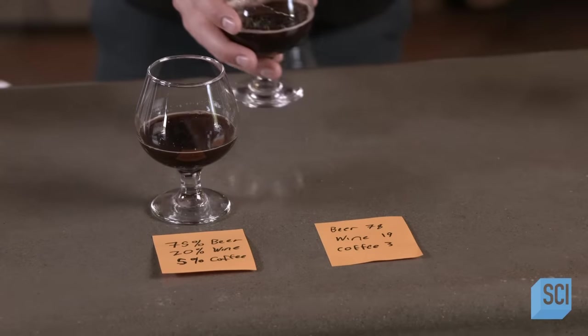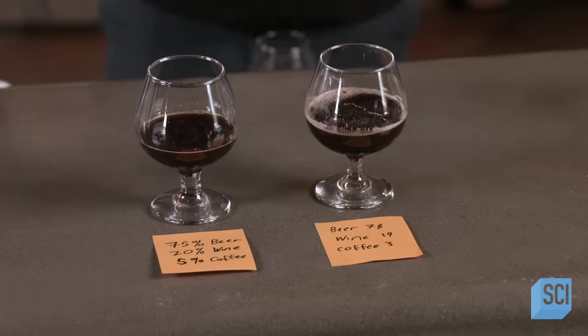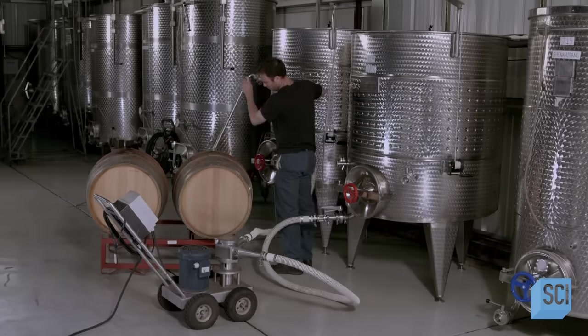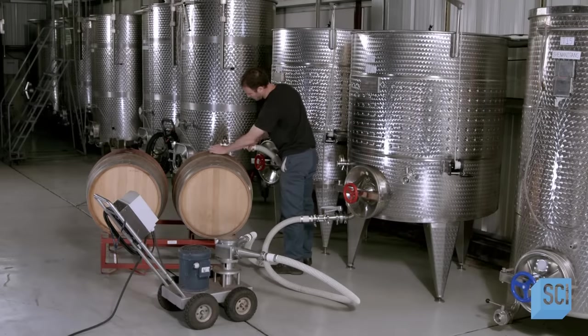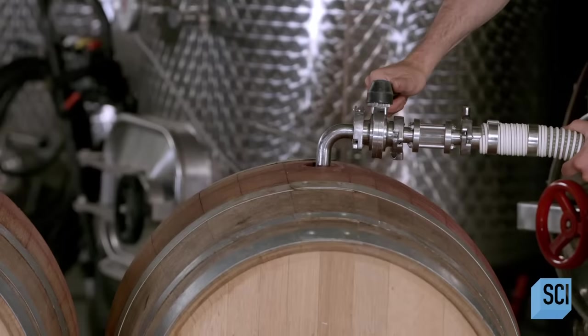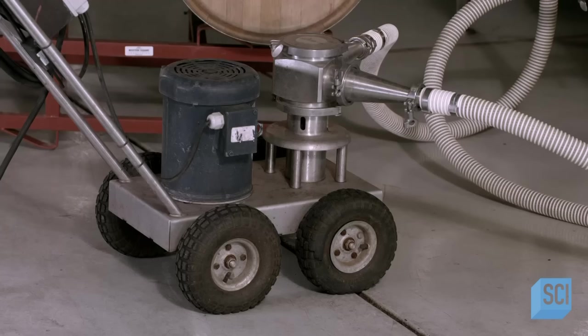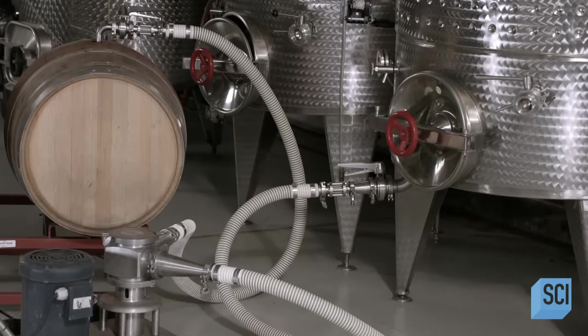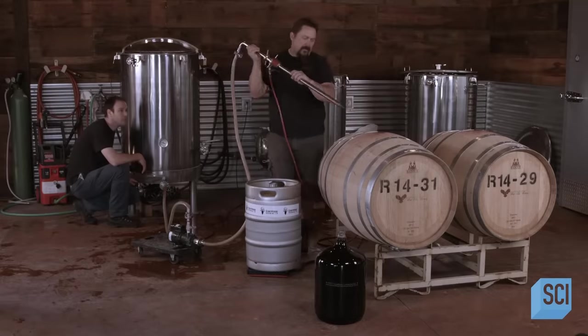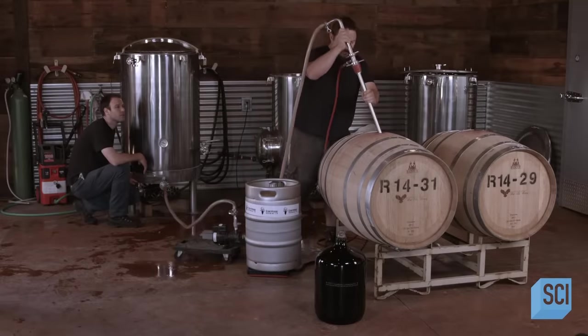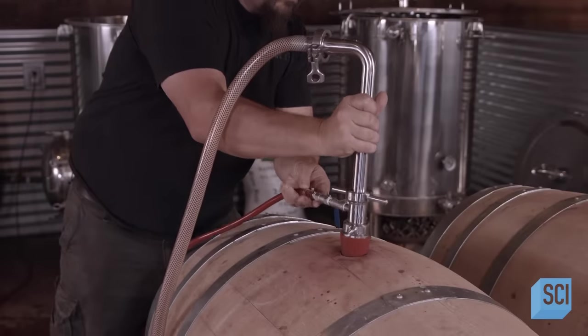Once they pin down the winning formula, they replicate it on a large scale for production. The winery pumps the selected wine from storage tanks into barrels for transport to the brewery. At the brewery, the brewmaster pumps the required amount of wine from those barrels into a blending tank.